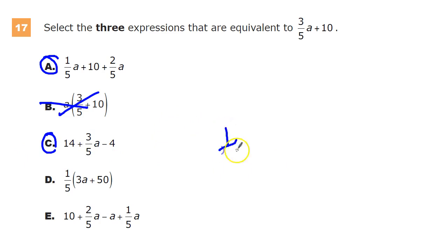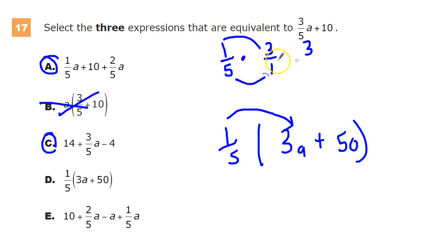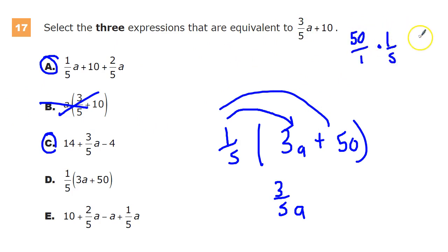For the next one, one-fifth times three a plus 50. So the first thing I'm going to do is distribute the one-fifth. And three is three over one. Any number that's a whole number is itself over one. So it's three over one. When I do multiplication of fractions, I multiply the numerators, and then I multiply the denominators. So that's three-fifths. So that works. Three-fifths a. Maybe the harder part is the 50 times one-fifth thing. 50 over one times one-fifth. 50 times one is 50. One times five is five. And 50 divided by 5 is equal to 10. So positive 10. That's exactly what it's supposed to be. So answer D is also correct.